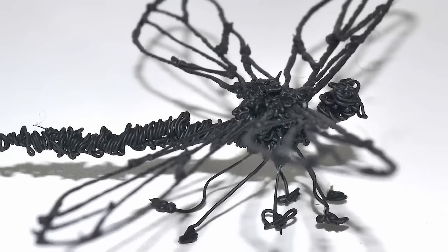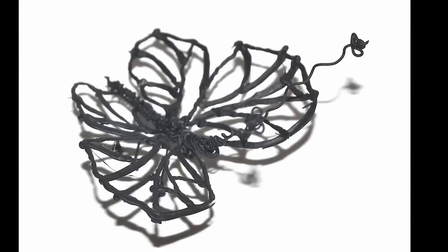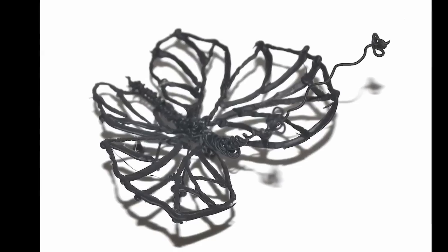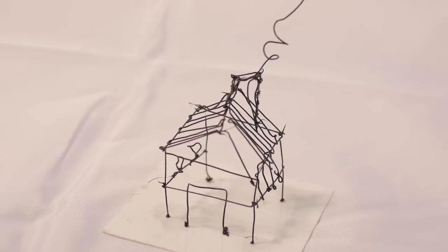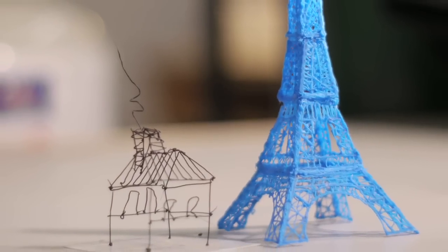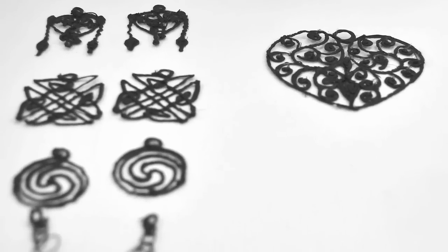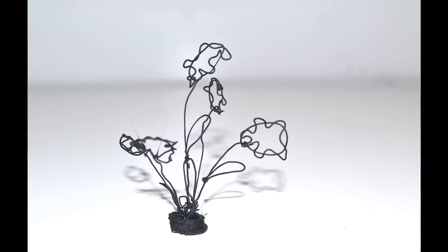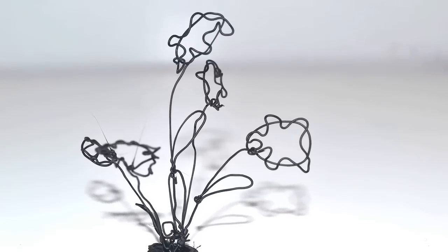So how does it work? 3Doodler uses cutting-edge patent-pending technology to heat and cool plastic as it passes through the body of the pen. Just like a 3D printer, the plastic cools rapidly and becomes hard.